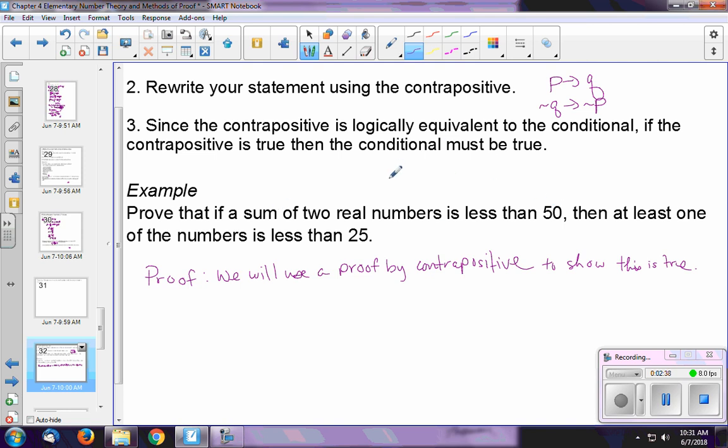So P is over here, and this is that X plus Y, right there, sum, has to be less than 50. What's the opposite of that? That their sum is greater than or equal to 50. Q is that X is less than 25, or Y is less than 25. So not Q would be that X is greater than or equal to 25, and Y is greater than or equal to 25. So now we have a little more to work with.